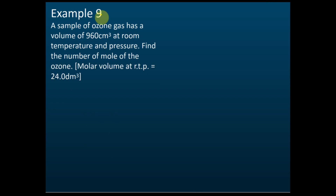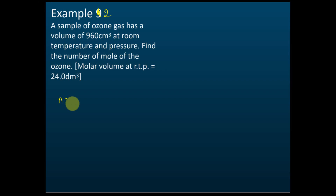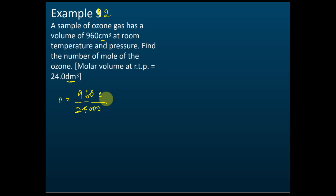Example 2: A sample of ozone has a volume of 960 cm³ at room temperature and pressure. Find the number of moles of ozone. The number of moles equals the volume, 960, divided by the molar volume. However, the molar volume is given in dm³ but this measurement is in cm³, so you have to convert the molar volume to cm³.